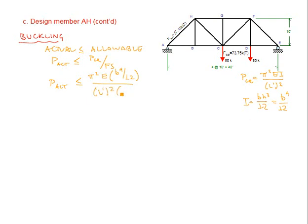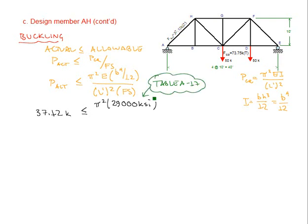Now substituting in values, our actual internal force in this structural member is 37.12 kips. That must be less than or equal to pi squared times the modulus of elasticity of structural steel, 29,000 ksi, that again comes from table A-17 in your Riley textbook, times our moment of inertia, b to the fourth divided by 12.